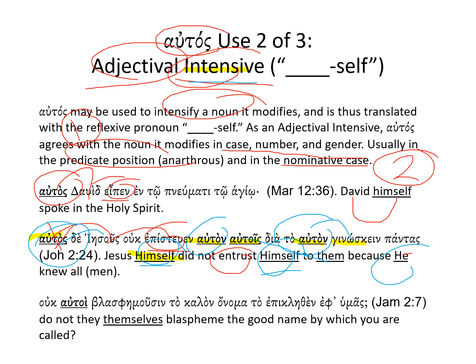Another instance of the intensive αὐτός: αὐτοί — 'they themselves.' There's a question mark, which is important to keep in mind: 'Do not they themselves blaspheme the good name by which you are called?' Here's our verb βλασφημοῦσιν — 'they blaspheme' — and the αὐτοί is not necessary, so it's an intensive: 'they themselves.' It's modifying the subject that's already implied in that verb ending.